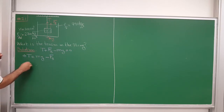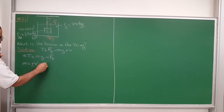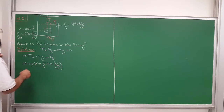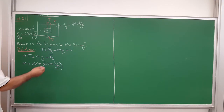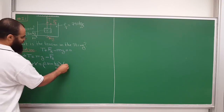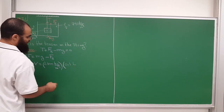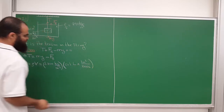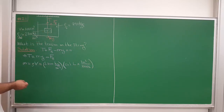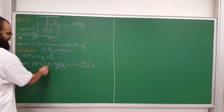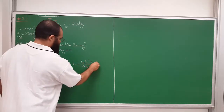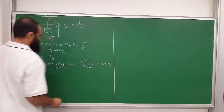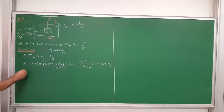The mass of the aluminum is density times volume: 2700 kilograms per cubic meter times 100 cubic centimeters. Remember that 1000 cubic centimeters make a liter, so this is 0.1 liters, and there are 1000 liters in a cubic meter. Multiplying these out, 2700 over 1000 is 2.7, times 0.1 gives a mass of 0.27 kilograms.